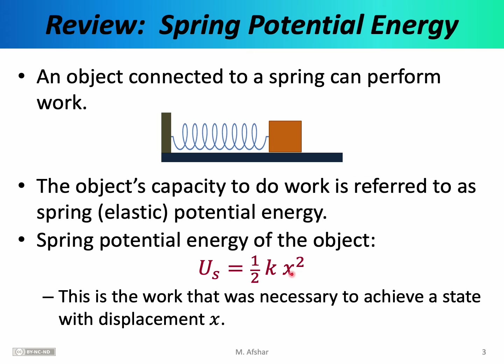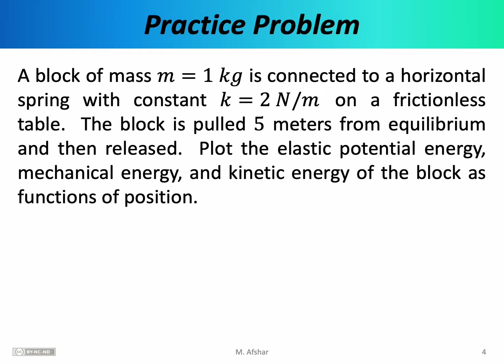Here, k is the spring constant and x is the amount by which the spring is compressed or stretched. Because it's x squared, it doesn't matter whether x is positive or negative. We use the letter U to denote potential energy. Now let's do a practice problem. A block of mass 1 kg is connected to a horizontal spring with spring constant 2 N/m on a frictionless table. The block is pulled 5 meters from equilibrium and then released.